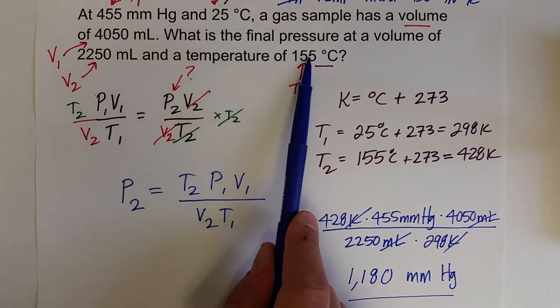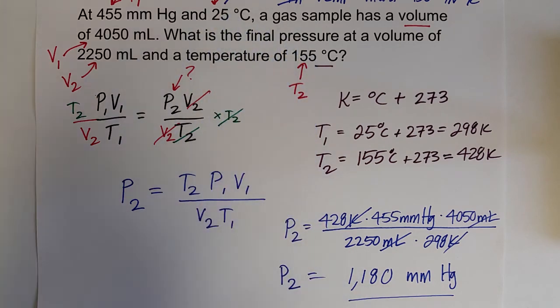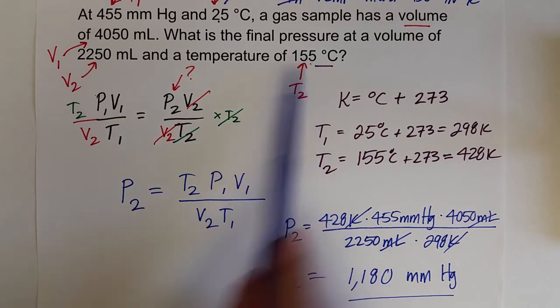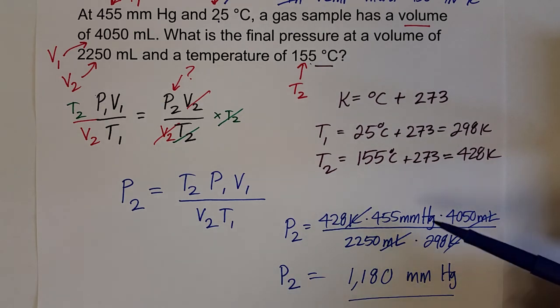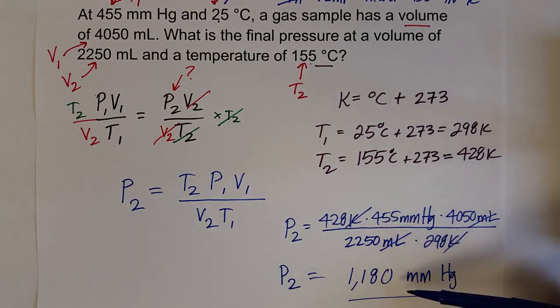Pressure is directly proportional to temperature, Gay-Lussac's law. So increasing the temperature should also increase our pressure. And so in both scenarios, it makes sense that our pressure increased from 455 torr to 1180 torr, or millimeters of mercury.